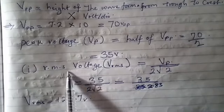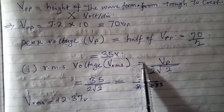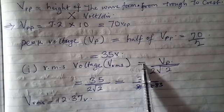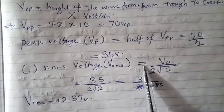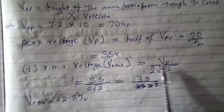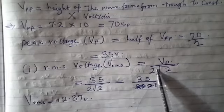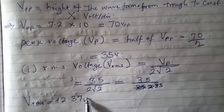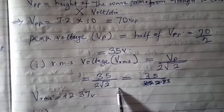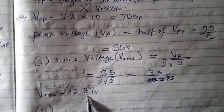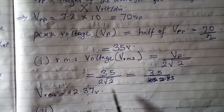After getting the peak voltage, you now apply the formula. The RMS voltage is the peak voltage over the square root of 2, which simplifies to peak voltage divided by 2 root 2. After proper arithmetic, you now have 12.3 volts as the RMS voltage.